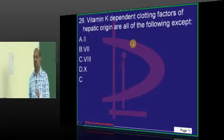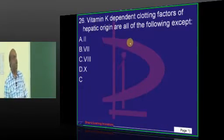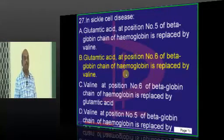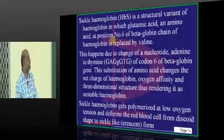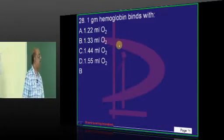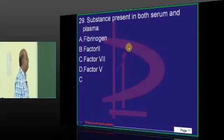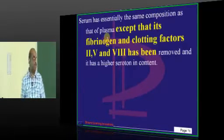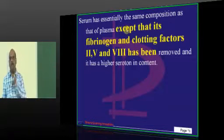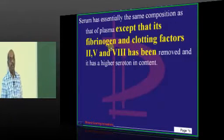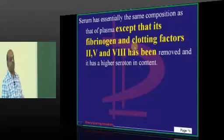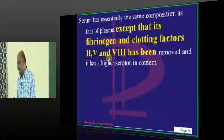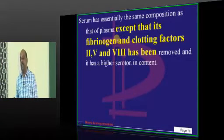2, 7, 9, 10 are all the vitamin K dependent clotting factors. Glutamate at position 6 of the beta globin chain replaced with valine is what you classically come across. 1.33 ml of oxygen is carried by every gram of hemoglobin. Now what is the difference between serum and plasma? Very reasonable question. Serum has the same composition like plasma except that the fibrinogen, factor 2, 5, and 8 are basically removed. And serum has higher serotonin content. That is the fundamental difference between serum and plasma.